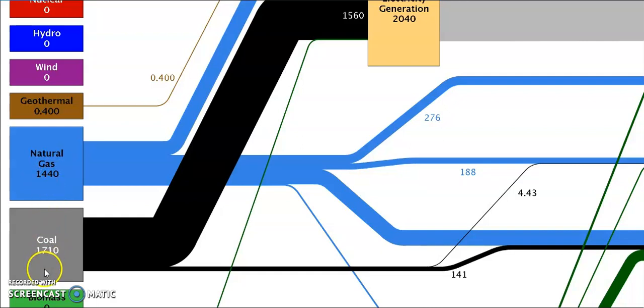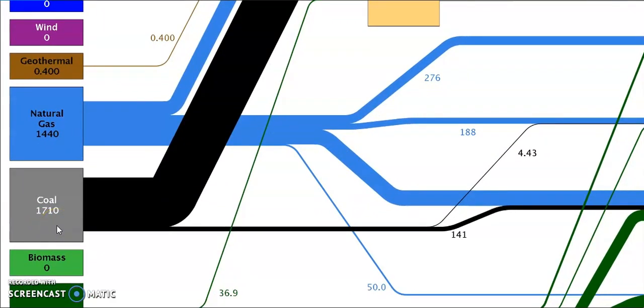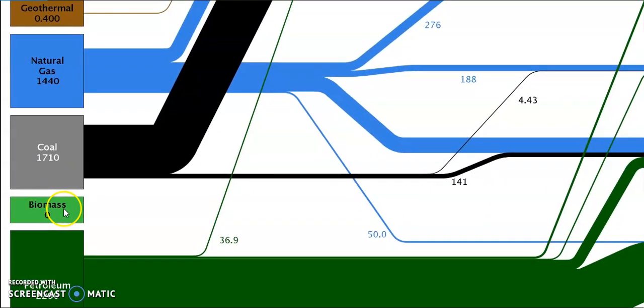And for coal it is a huge amount. You can see it is 1,710 million metric tons of carbon emission of United States every year. And for biomass the carbon emission is zero.